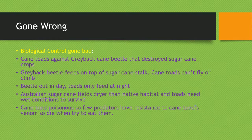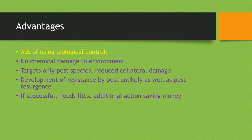The Australian sugar cane fields were drier than the cane toad's native habitat, and the toad needed wet conditions to survive. So not only could they not fly, but they didn't feed at the right time and didn't have the right conditions — meaning they couldn't take out the grey bag beetles and were ineffective. Furthermore, cane toads are poisonous and few predators have resistance to their venom, meaning the cane toad became a predator of many other native species instead.